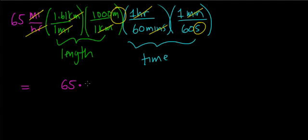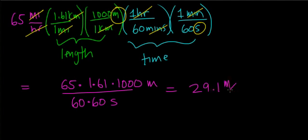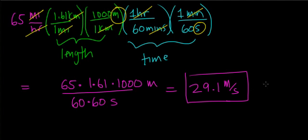Multiplying everything in the numerator and dividing by everything in the denominator, I get 65 × 1.61 × 1,000 meters divided by 60 × 60 seconds, which gives exactly the same result as before: 29.1 meters per second. You should get comfortable doing both time and length conversions in the same step.